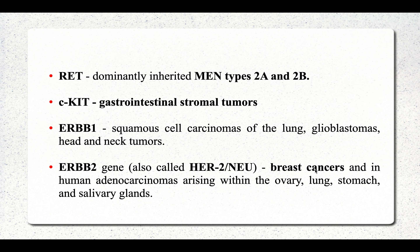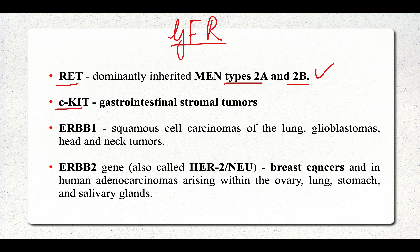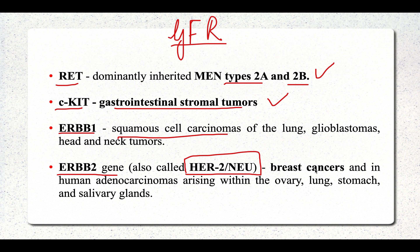Examples of growth factor receptor oncogenes include the RET oncogene, which is dominantly inherited in MEN type 2A and type 2B syndromes. KIT is mutated in another form of tumor. ERBB1 is mutated in squamous cell carcinomas. ERBB2, also known as the HER2 gene, is a very important growth factor receptor gene mutated in breast cancer.